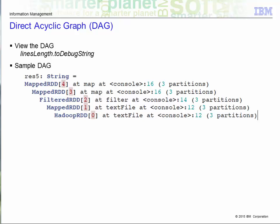To view the DAG of an RDD after a series of transformations, use the toDebugString method as you see here on the slide. It will display the series of transformations that Spark will go through once an action is called. You read it from the bottom up.